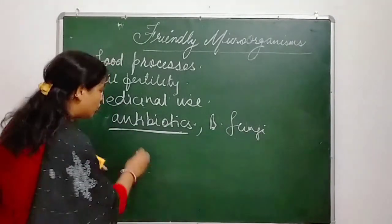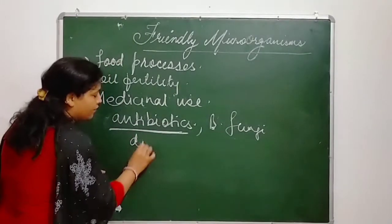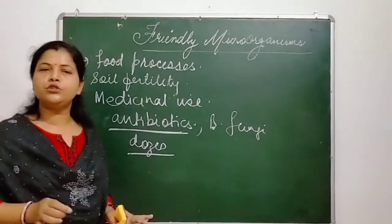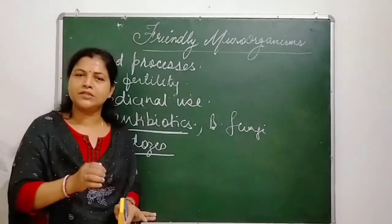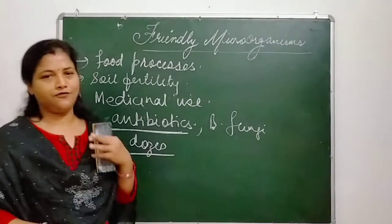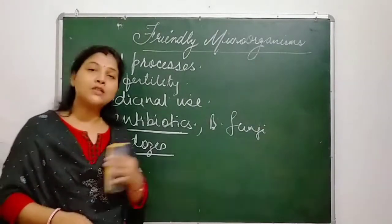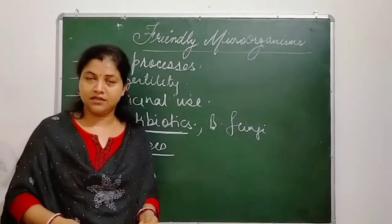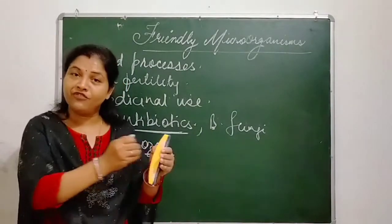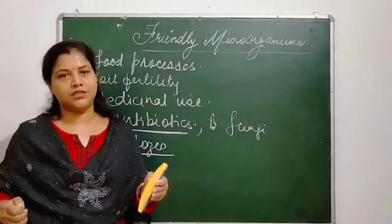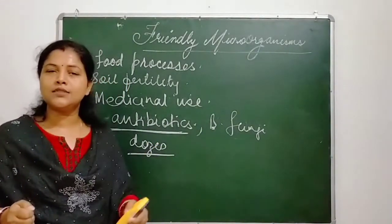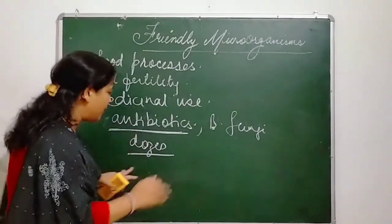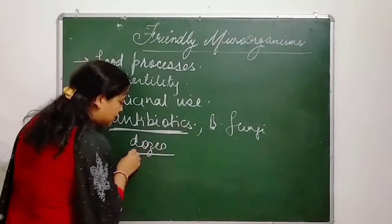There are doses of these antibiotics. When you go to the doctor, the doctor prescribes antibiotics either for three days, five days, seven days, or sometimes more than seven days. It depends upon the severity of your disease — which disease it is and how severe it is.